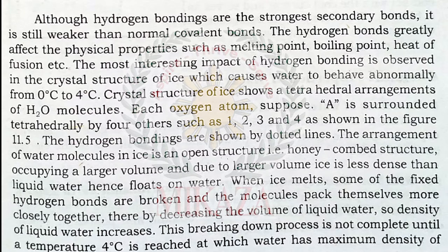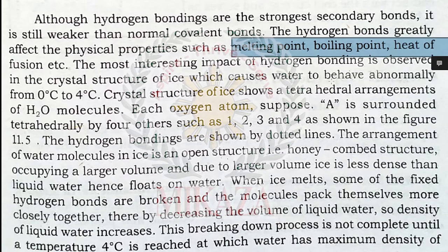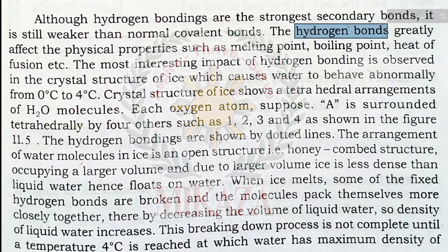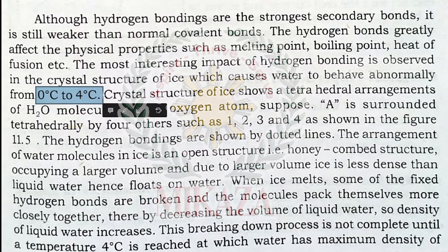The hydrogen bond greatly affects physical properties such as melting point, boiling point, and heat of fusion. The most interesting impact of hydrogen bonding is observed in the crystal structure of ice, which causes water to behave abnormally from 0 degrees Celsius to 4 degrees Celsius.